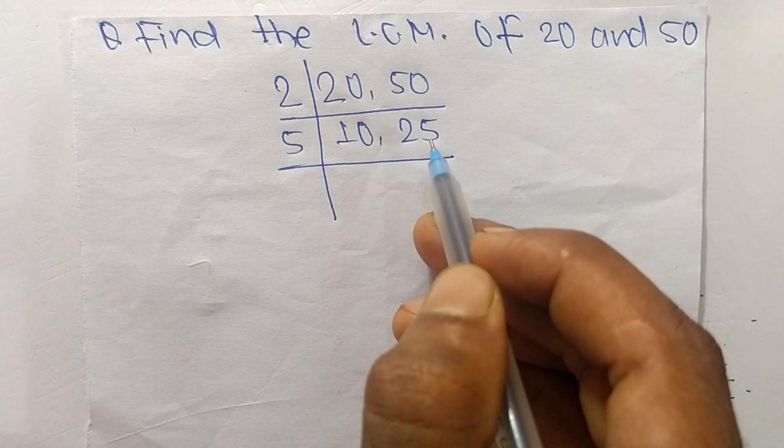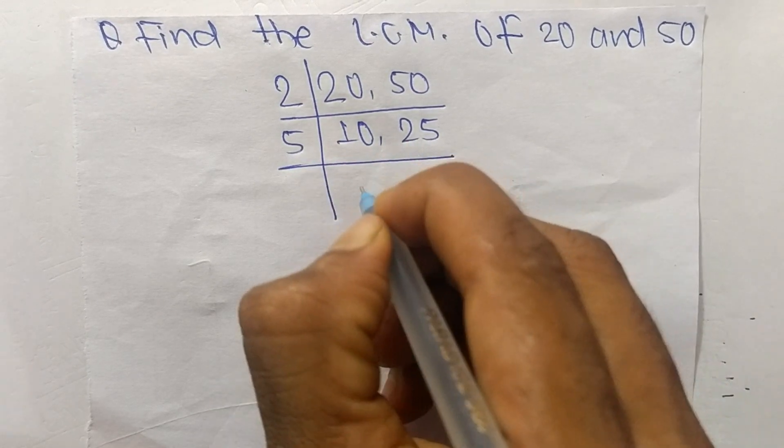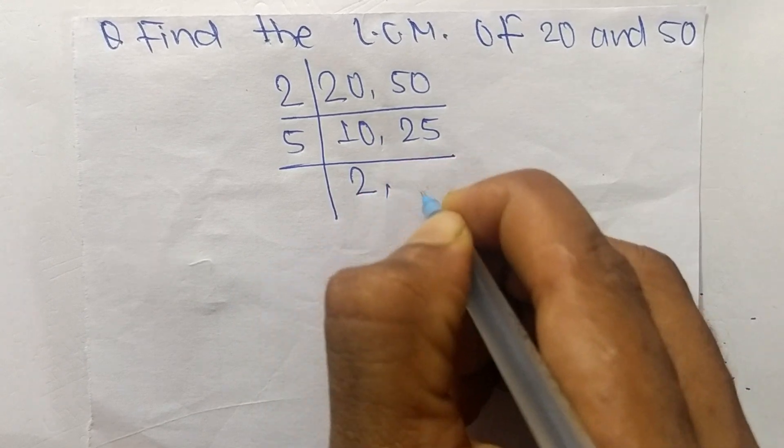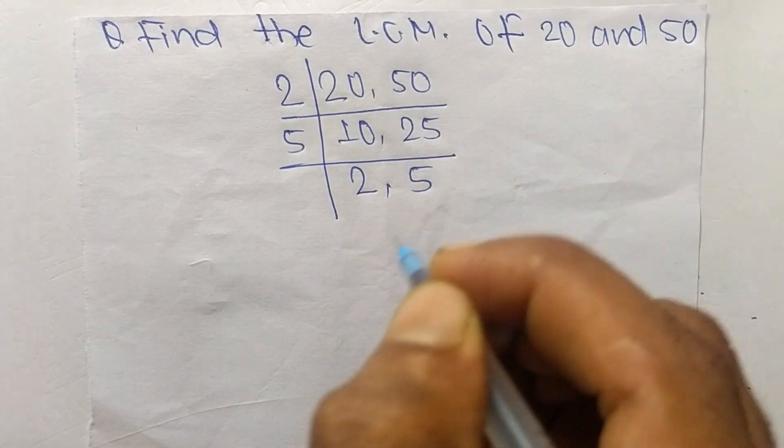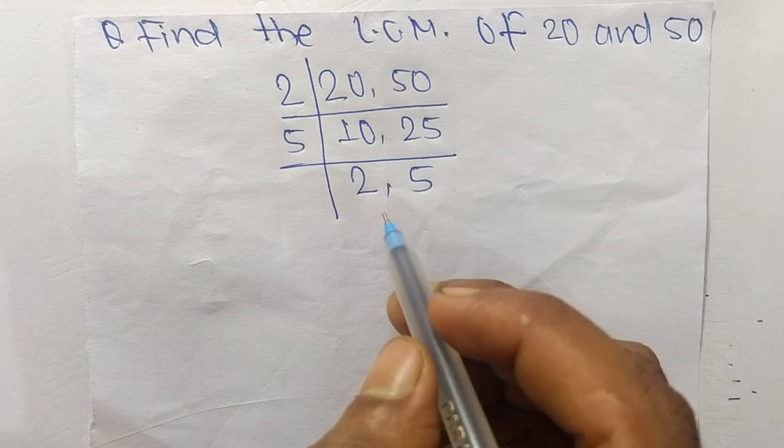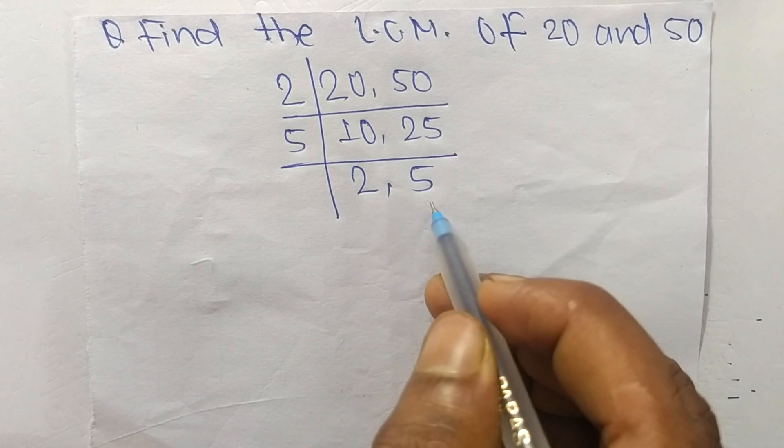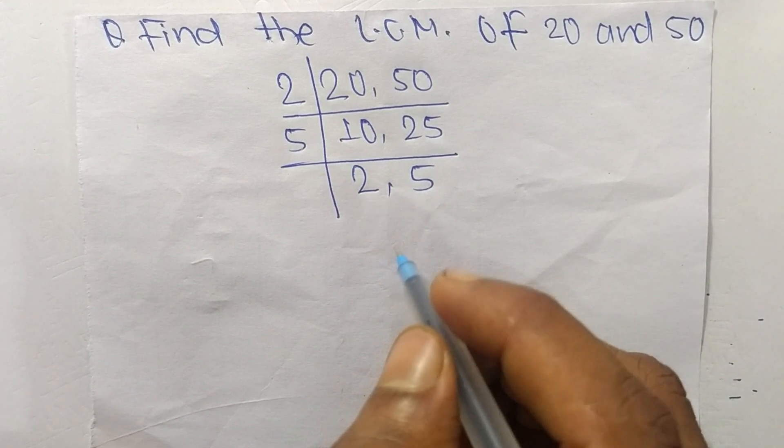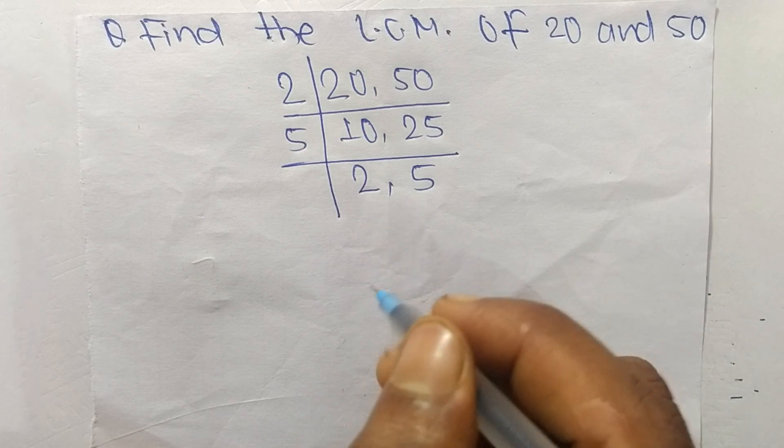So 5 times 2 means 10 and 5 times 5 means it is 25. So now we have here 2 and 5 which are not exactly divisible by the same number.